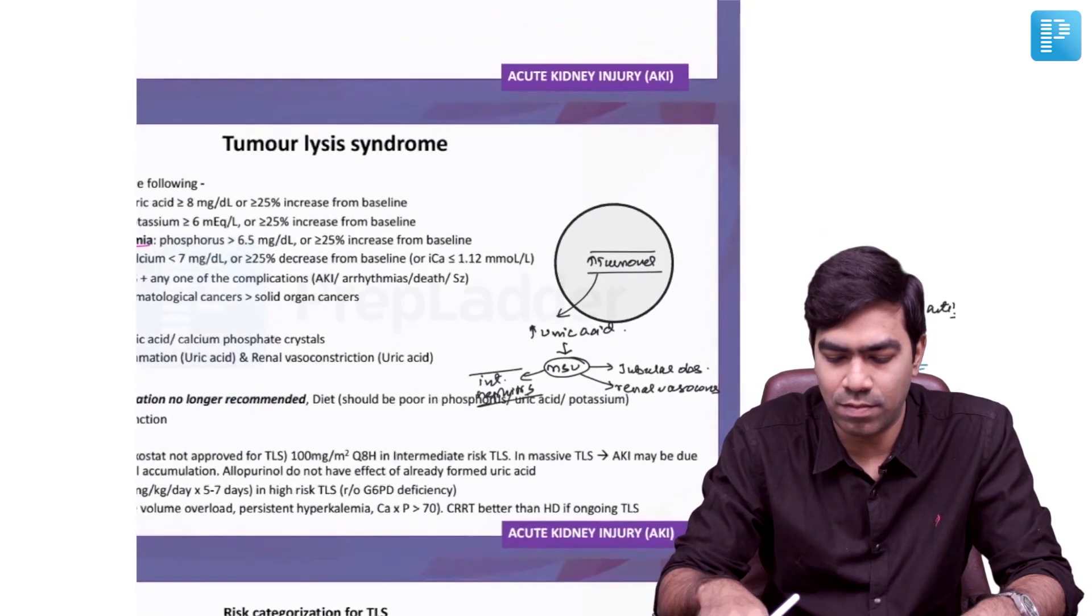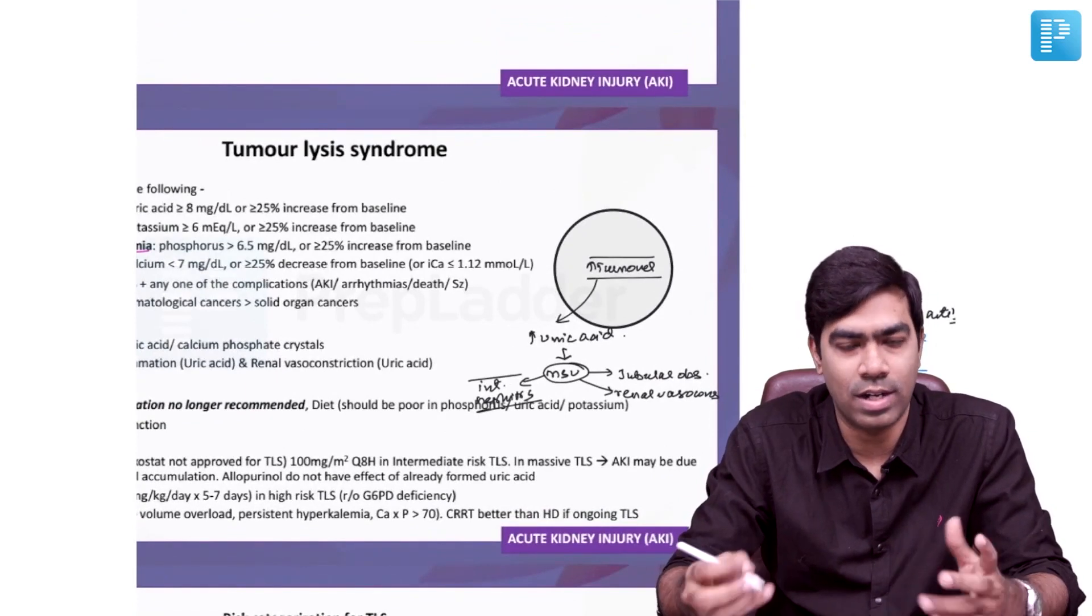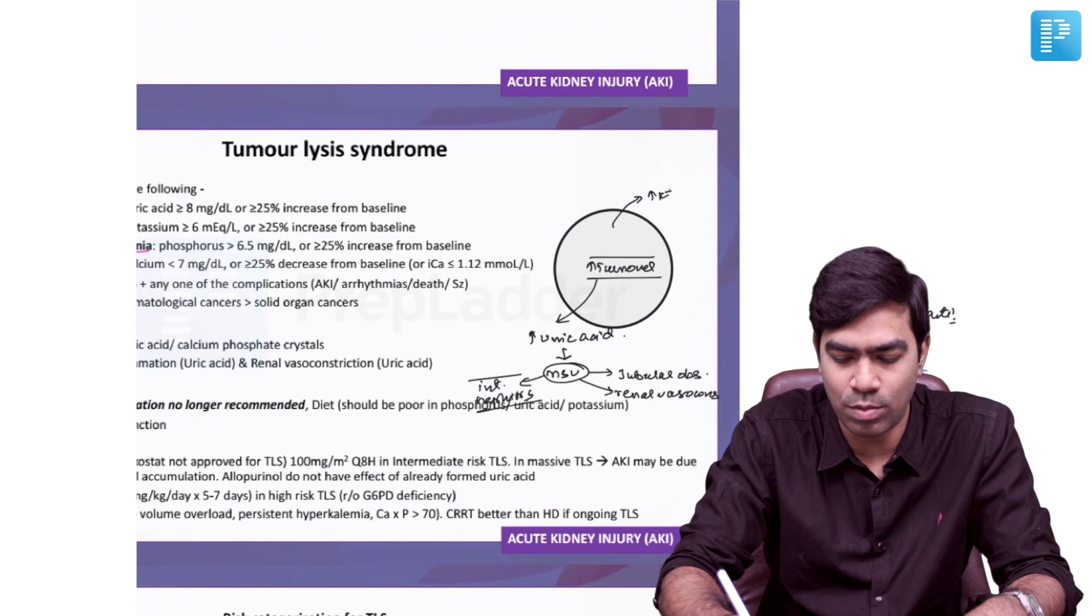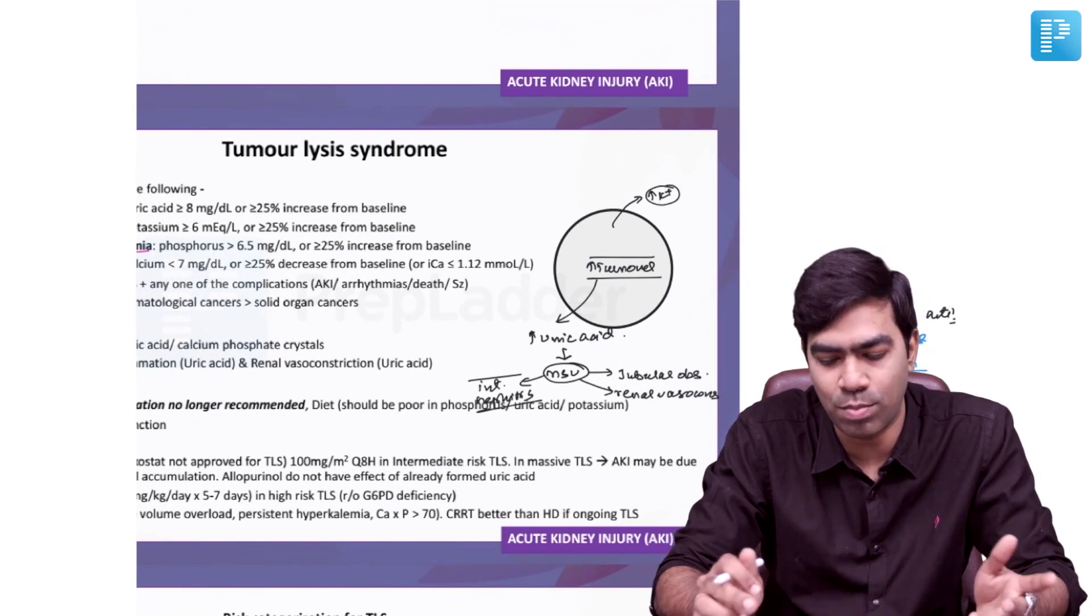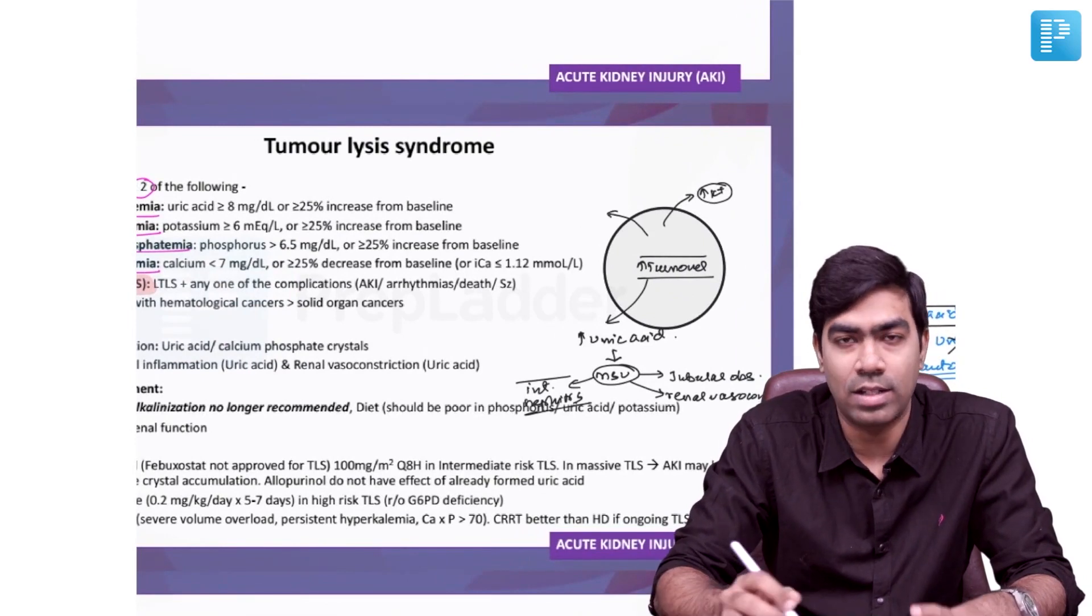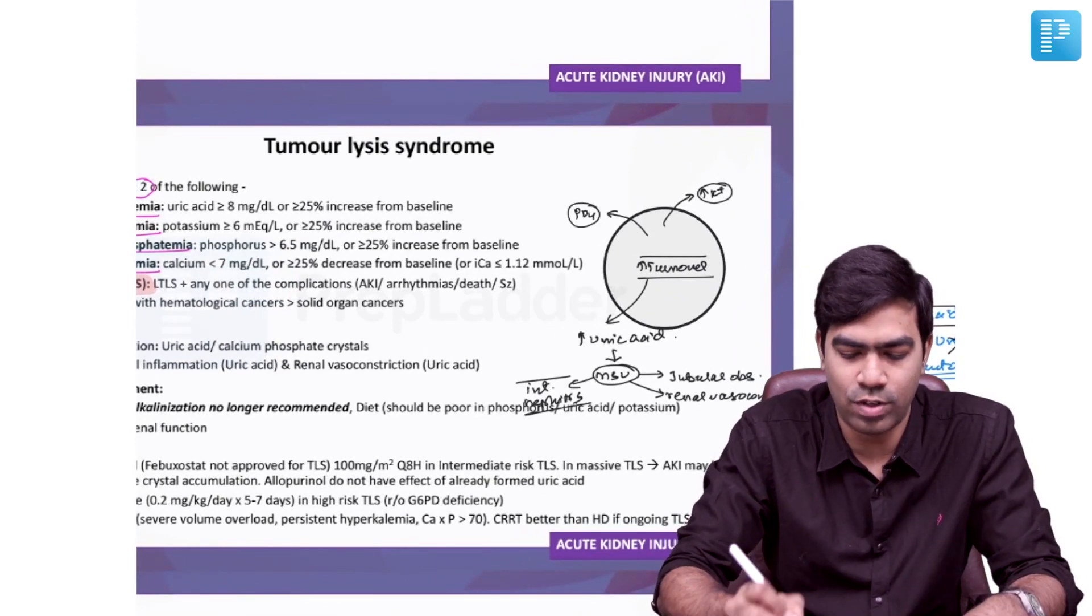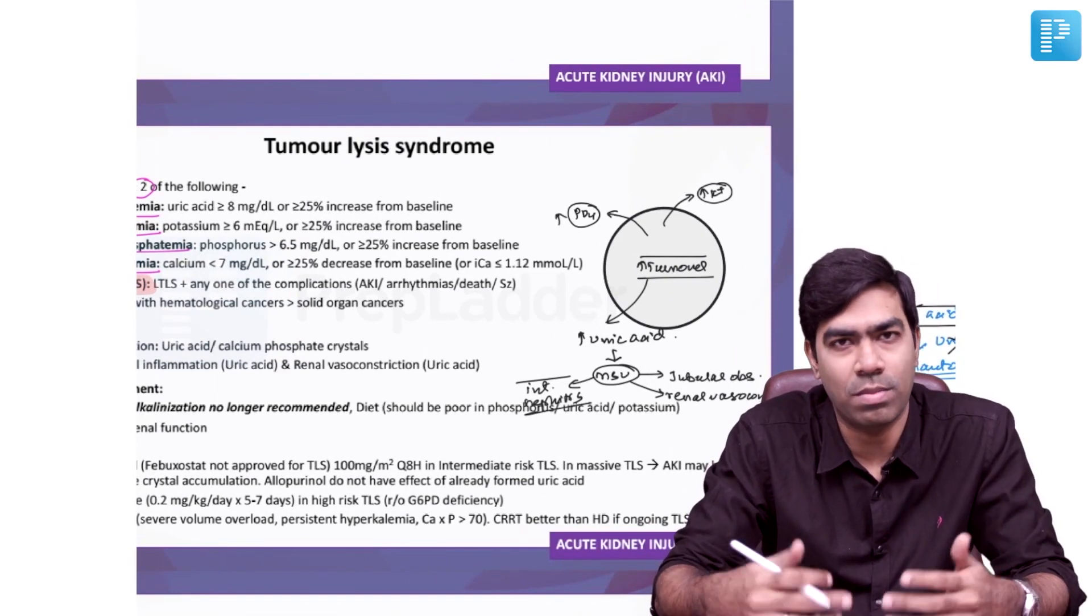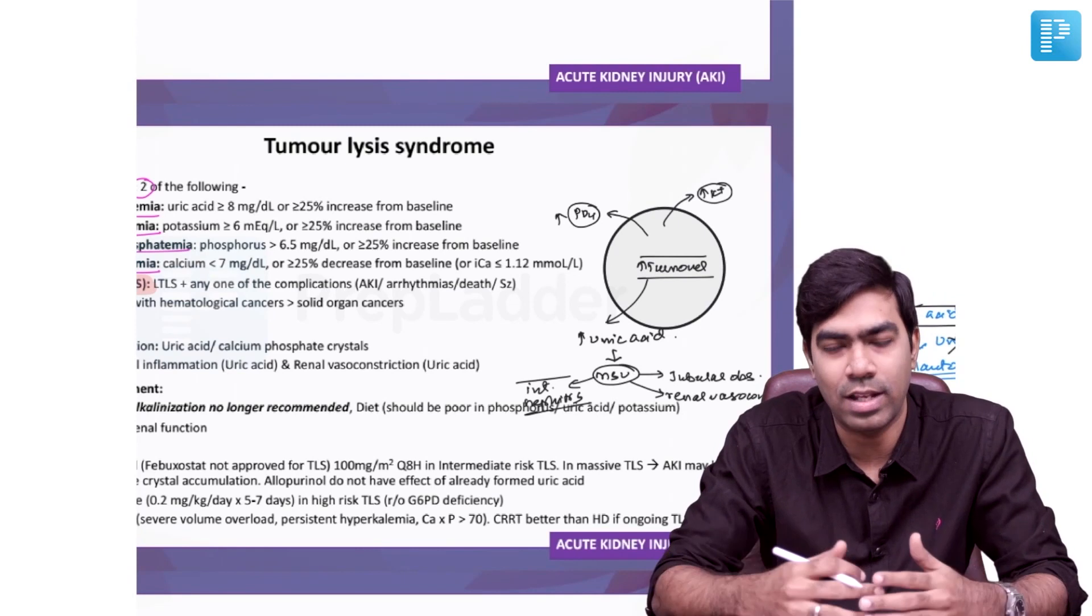Second, when cells undergo rapid turnover and destruction, especially after chemotherapy, they release a lot of potassium because ICF is rich in potassium. So you might end up with hyperkalemia. The cells also contain a lot of phosphorus and phosphate, so patients can develop hyperphosphatemia because of rapid turnover and cell lysis, particularly after chemotherapy for hematological cancer.